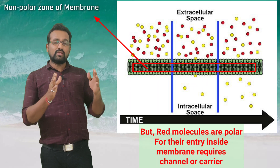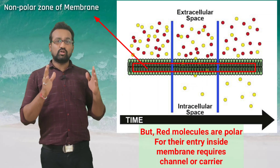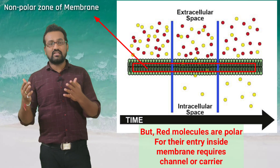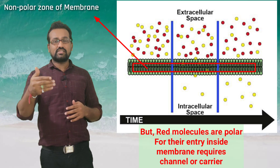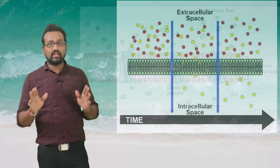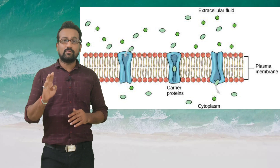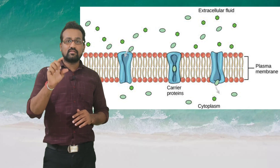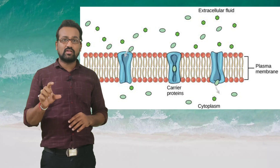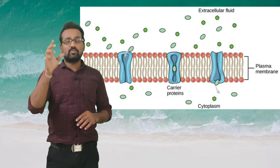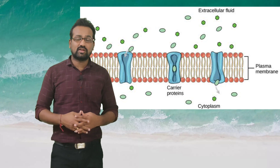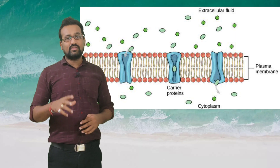A problem arises when the molecule is polar — meaning it contains a charge, whether partial or complete. The molecule faces difficulty entering through the membrane. For that, these proteins perform a key role: functioning as a channel, carrier, or transporter to carry molecules from outside to inside and from inside to outside. Various ions are also transported from outside to inside through these channels.